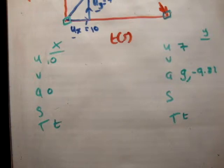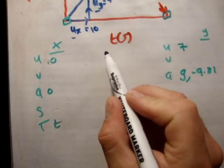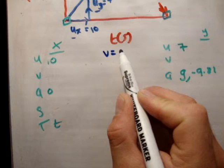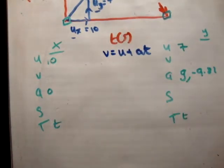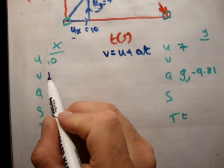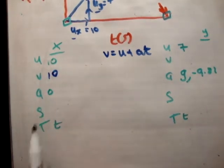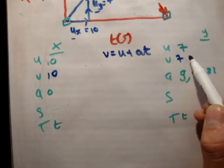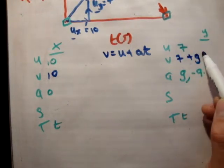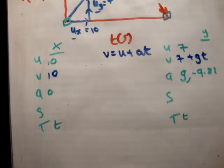So the next thing we do is our velocity. We use the formula v is equal to u plus a t. Apply that to the x direction, and you get v sub x is equal to 10, because there is no acceleration. v sub y is equal to 7 plus gt.